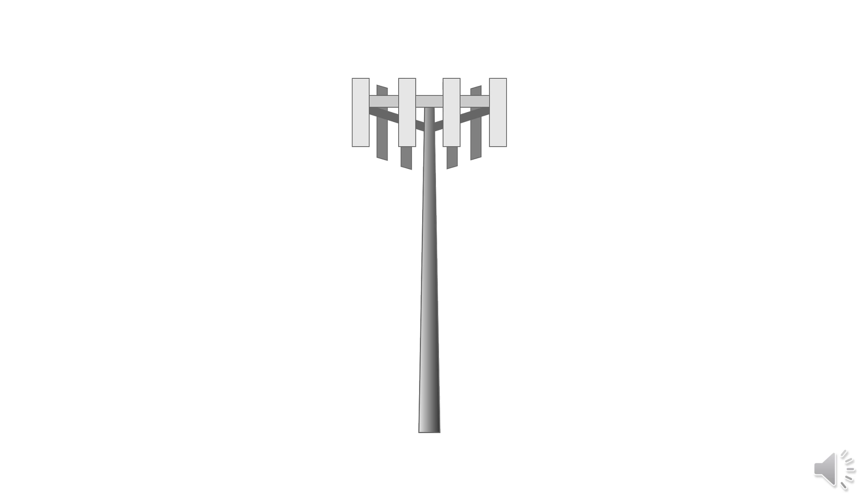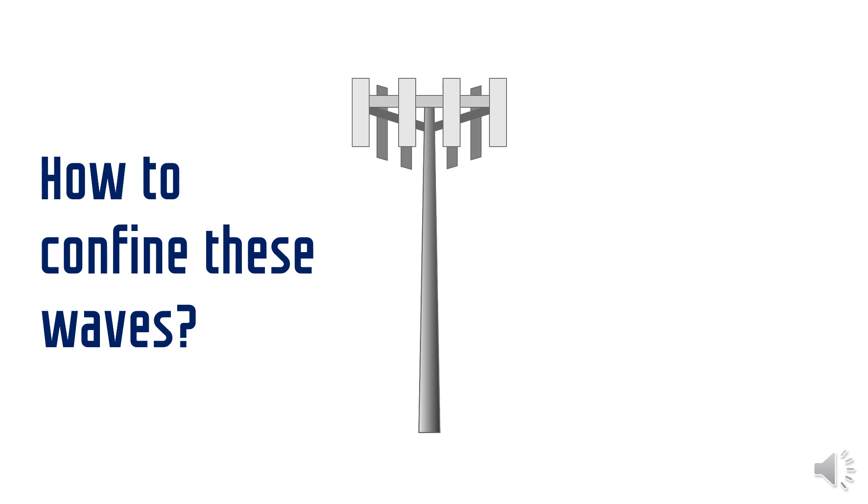Transmitting data using antennas is problematic because the signals spread around everywhere. But suppose if we want to direct these waves in a particular direction, what can we do? I think we can use waveguides. Now let's see what are they.